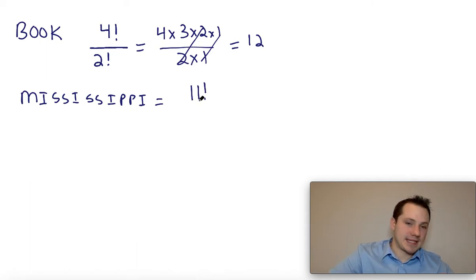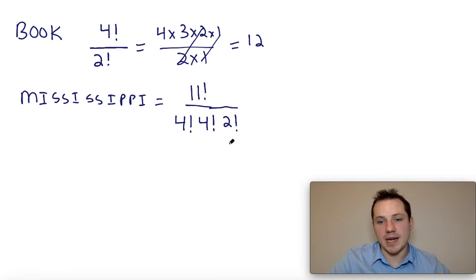And we have to count the repeats. So I can see that I repeats itself four times. Because I repeats itself four times, I put a four factorial in the denominator. S also repeats itself four times. So I have to put four factorial in the denominator for the S. And P repeats itself twice. So I would have to put a two factorial in the denominator.